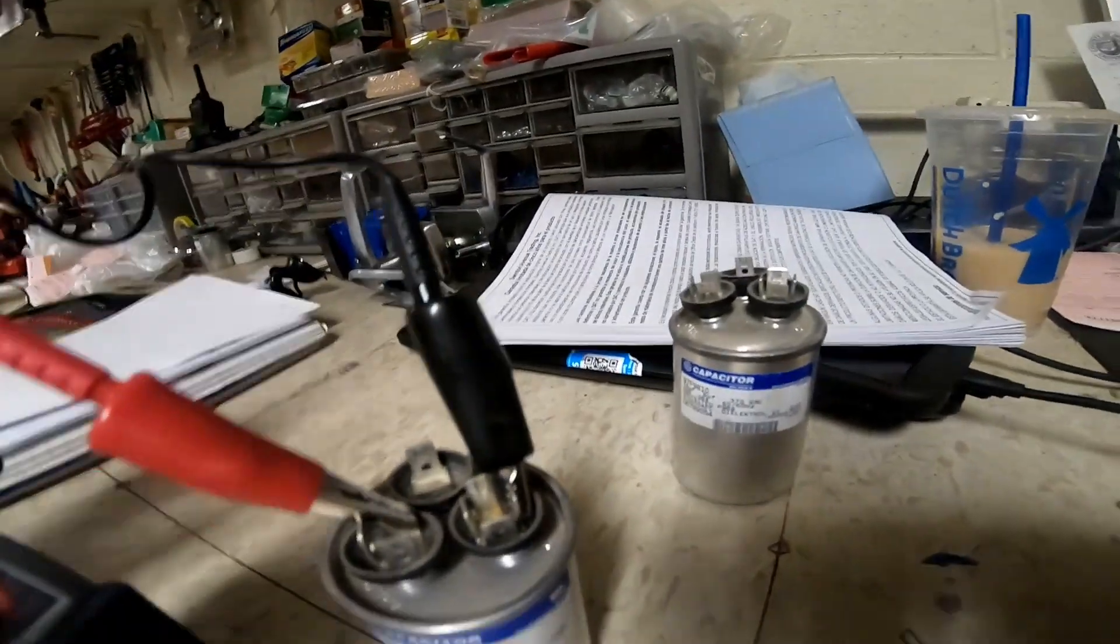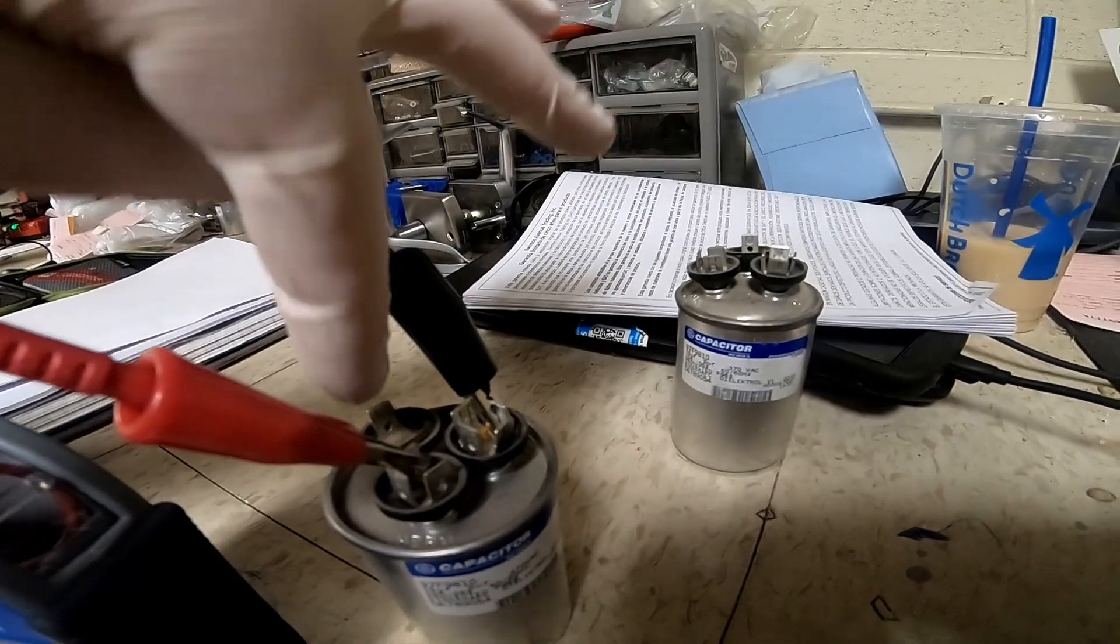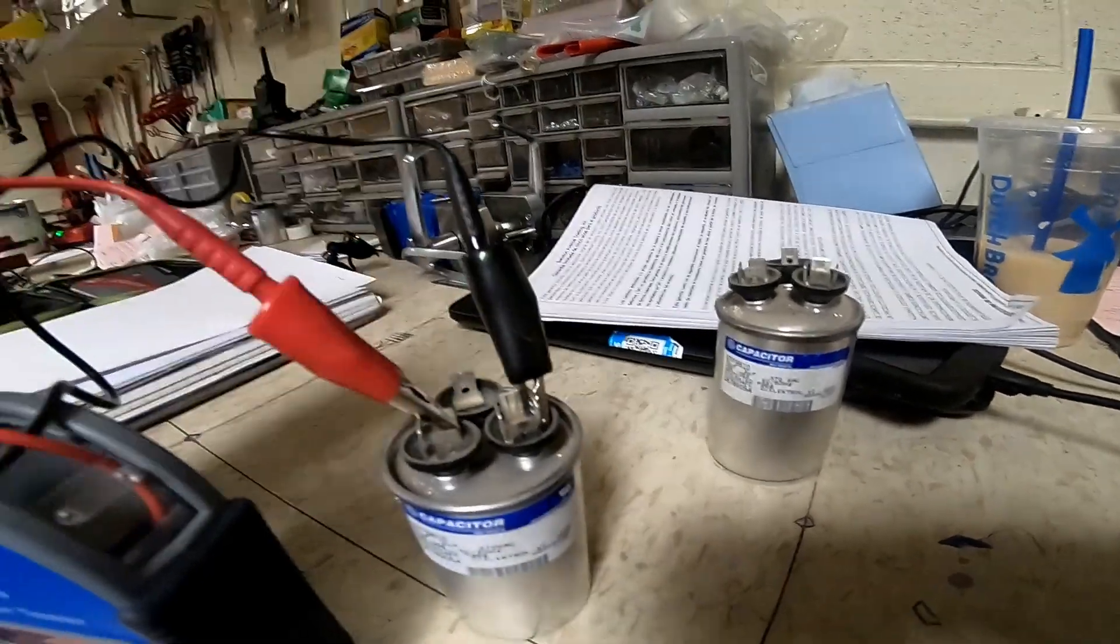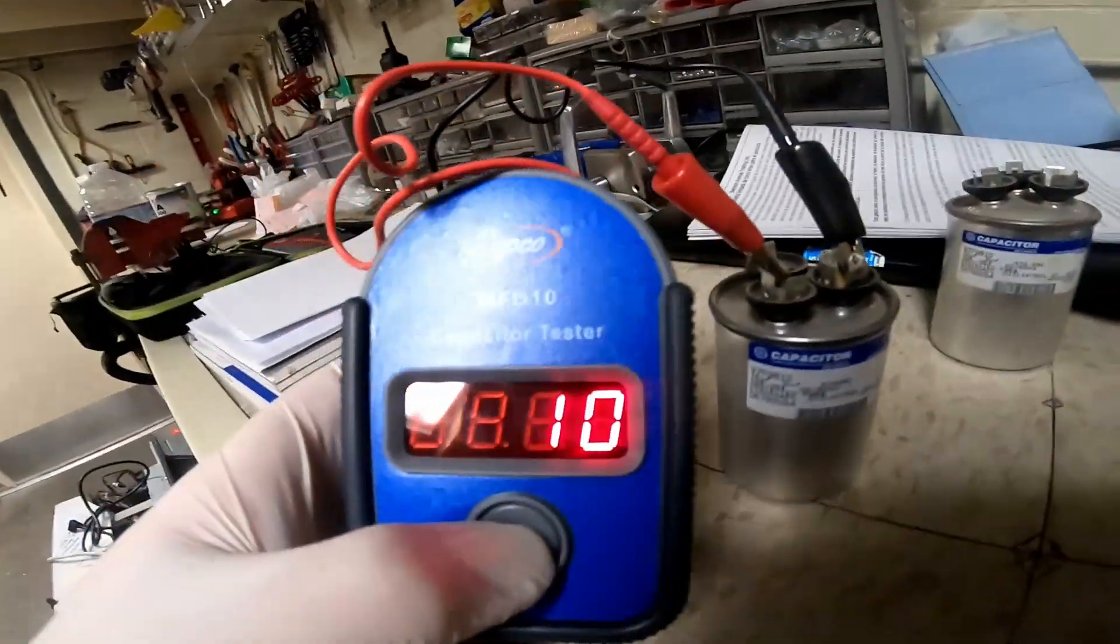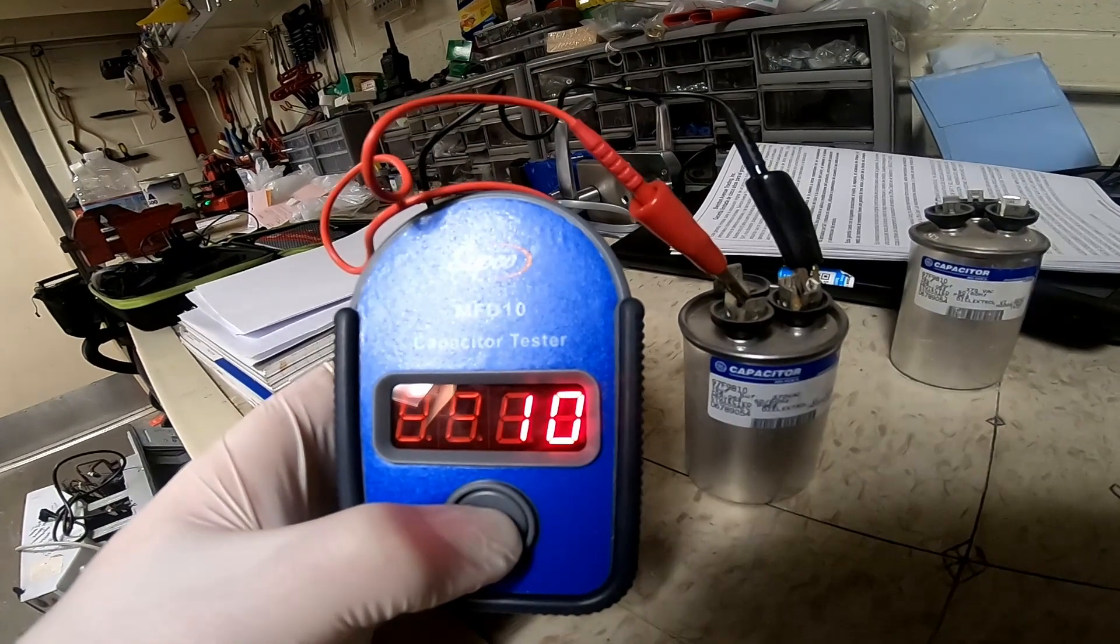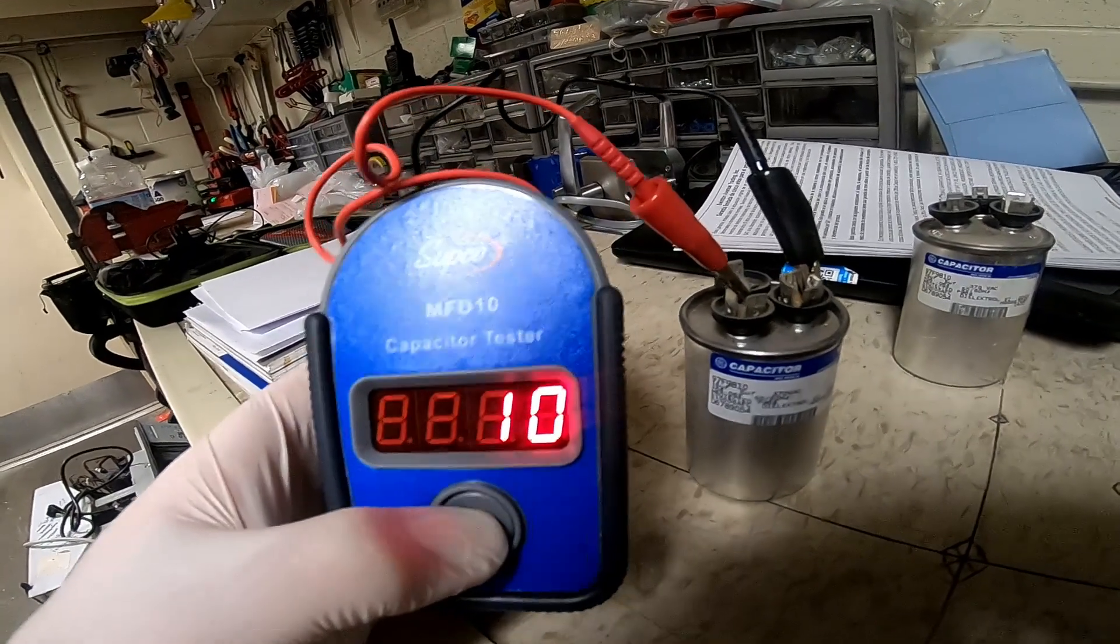You leave it on the common and you move the red from one to the other capacitor. This one's supposed to be 15 plus or minus 6 percent, and you can see that it's at 10, so it's out of spec on that one.